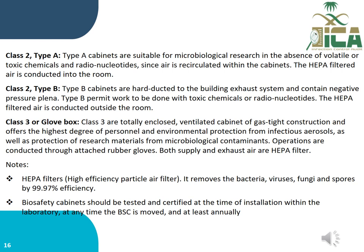Class 2, Type B cabinets are hard-ducted to the building exhaust system and contain negative pressure plenums. Type B permits work with toxic chemicals or radionuclides, and the HEPA-filtered air is conducted outside the room. Class 3, or glove box, cabinets are totally enclosed ventilated cabinets of gas-tight construction and offer the highest degree of personnel and environmental protection from infectious aerosols.